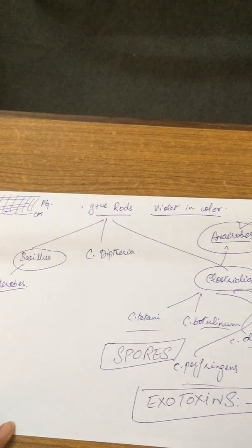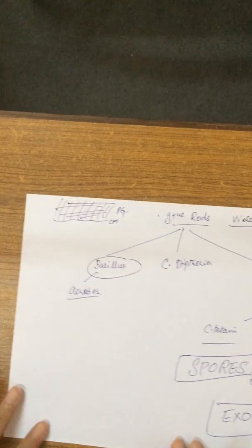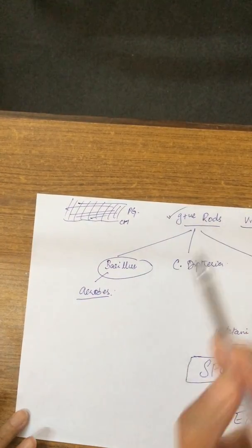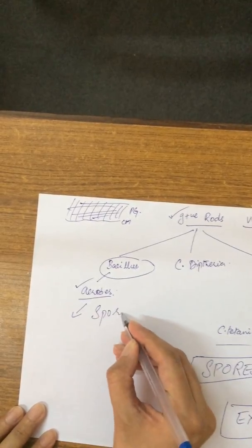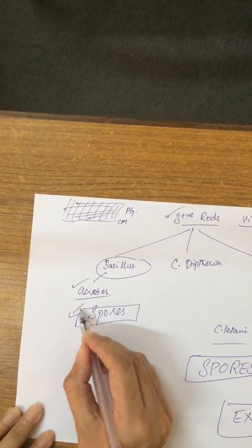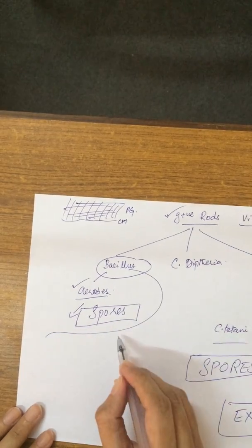The Bacillus species are gram-positive rods, they are aerobes, and they also have spores. Now what are the common Bacillus?